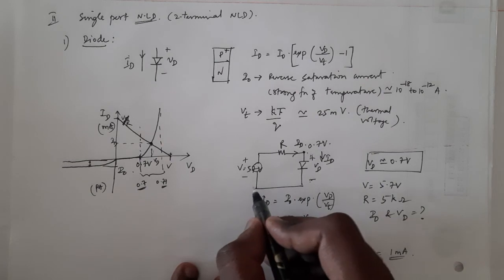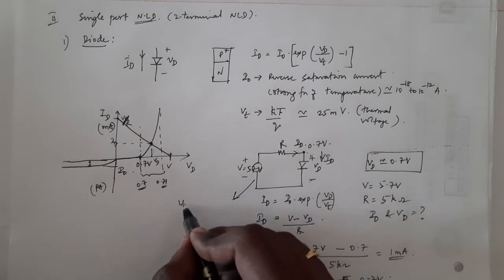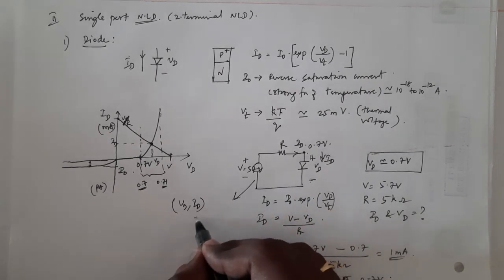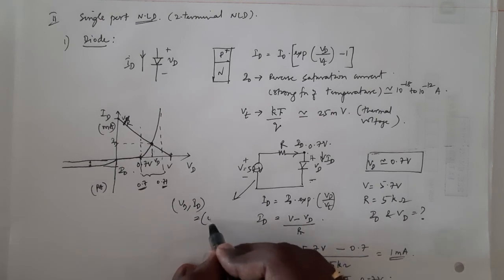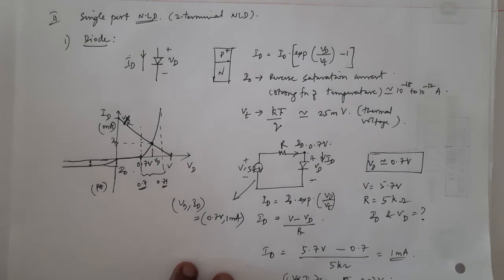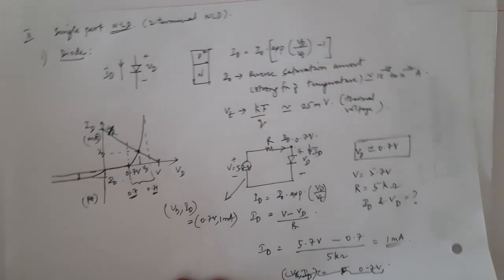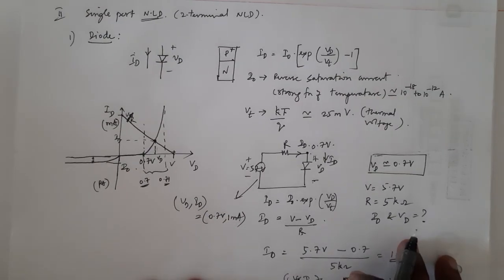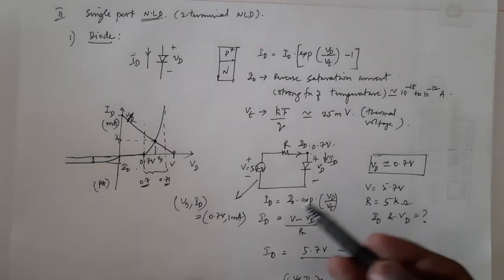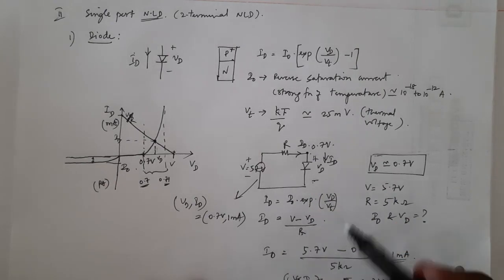The final solution for this circuit is: VD = 0.7V (assumed) and ID = 1 mA. This is how we can easily solve any diode nonlinear circuit involving diodes using the VD approximation.